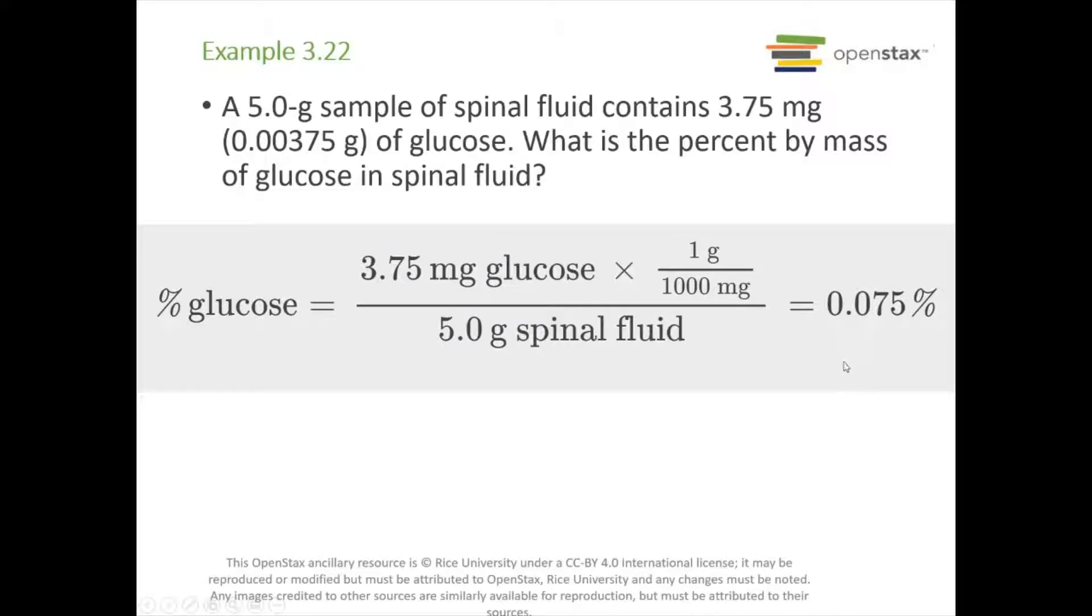Here's an example: a 5 gram sample of spinal fluid contains 3.75 milligrams, or 0.00375 grams of glucose. We want the percent by mass of glucose in the spinal fluid. The spinal fluid is our entire solution, so that goes on bottom. Our mass of solute goes on top, in this case glucose. We need to change it from milligrams to grams: there's 1 gram per 1000 milligrams. Don't forget to multiply times 100, and you get 0.075%.